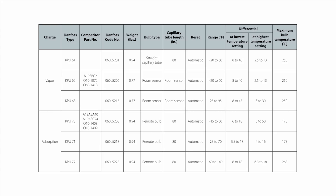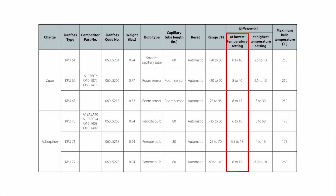I want to come back to the differential and how it is affected by evaporator temperature. A thermostat will have either a fixed differential or a differential range you can adjust. The caveat is that value is specified at a specific evaporator or space temperature. If you deviate from that temperature the differential is going to either increase or decrease — the lower the evaporator or space temperature, the larger that differential is going to be.